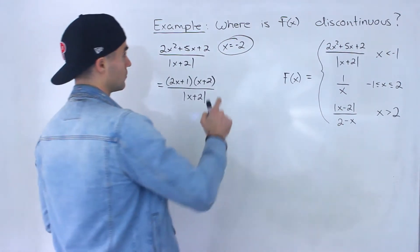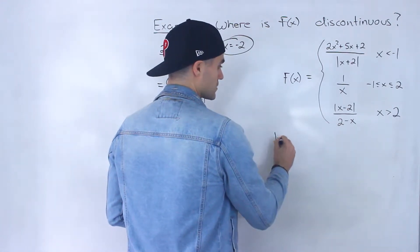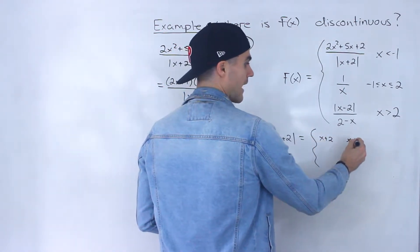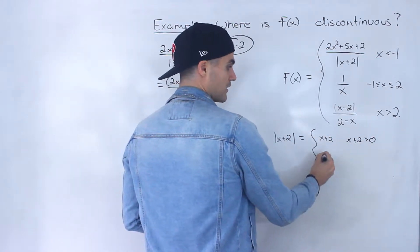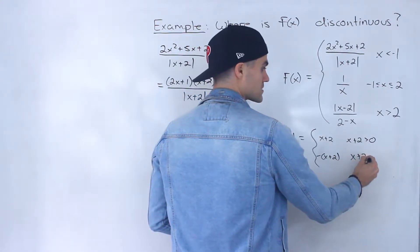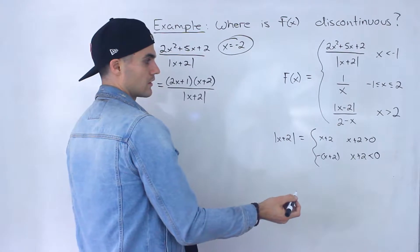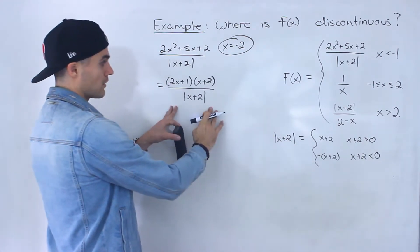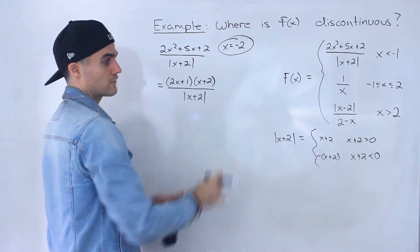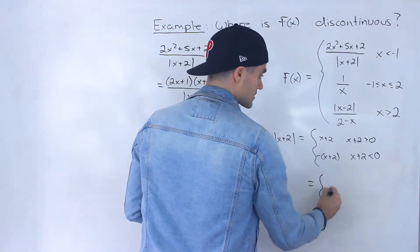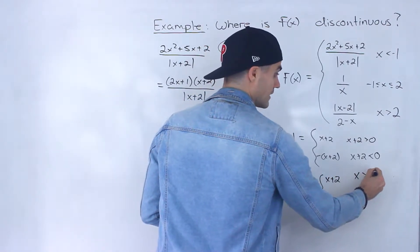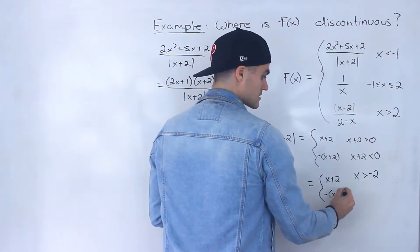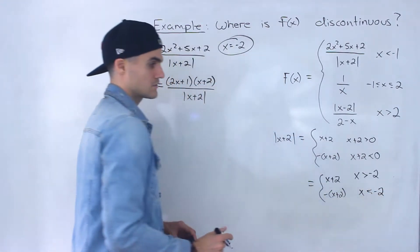Let's get into more detail. The absolute value of x + 2 can be converted to a piecewise function: it's (x + 2) when x + 2 > 0, and negative (x + 2) when x + 2 < 0. We don't need to worry about x + 2 = 0 since that makes the denominator zero. Simplifying: the absolute value equals (x + 2) when x > -2, or -(x + 2) when x < -2.